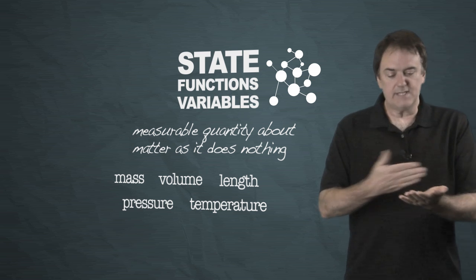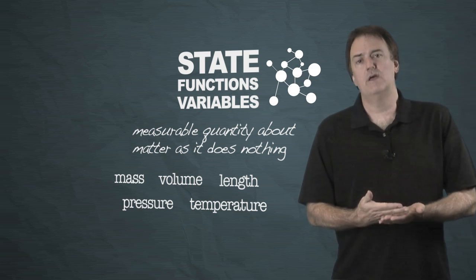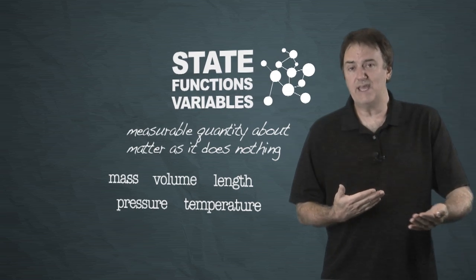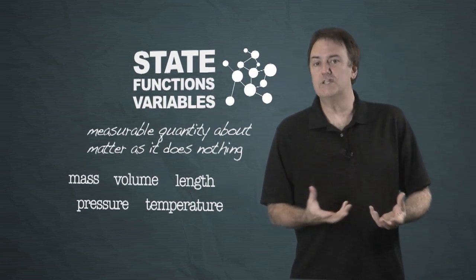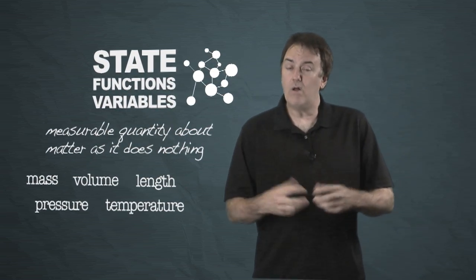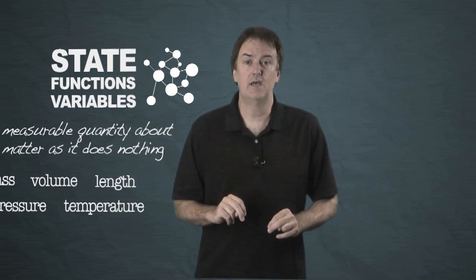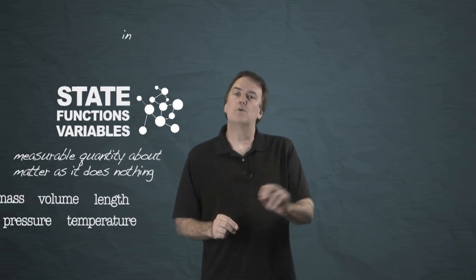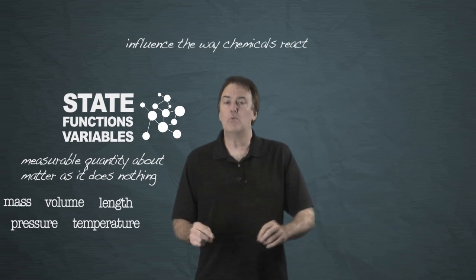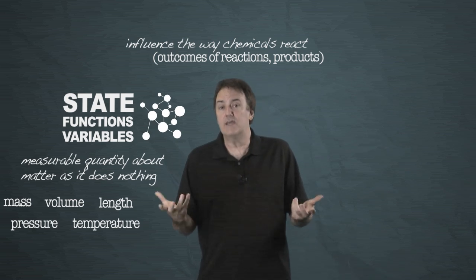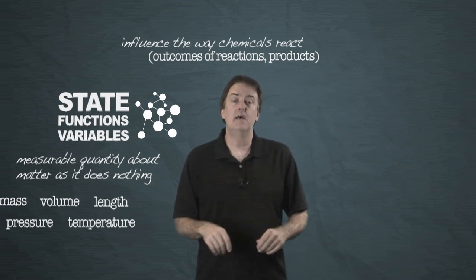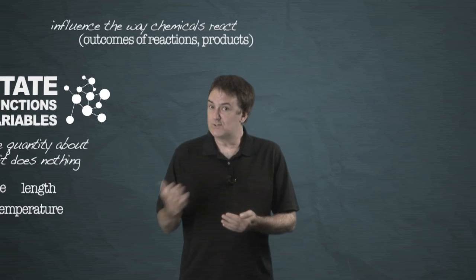And these are important because as scientists talk to one another so that you can repeat an experiment, you need to know the conditions at which things were done because all of these state functions will influence the way chemicals react and the way your outcomes and your reaction products and everything. Everything can be affected by these. So it's important to keep them straight.